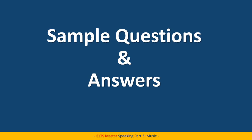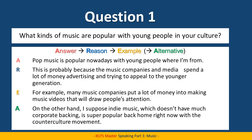So let's look at some sample questions and answers for this lesson on music. The first question is: what kinds of music are popular with young people in your culture? Here's my answer: Pop music is popular nowadays with young people where I'm from. This is probably because the music companies and media spend a lot of money advertising and trying to appeal to the younger generation. For example, many music companies put a lot of money into making music videos that will draw people's attention. On the other hand, I suppose indie music, which doesn't have much corporate backing, is super popular back home right now with a counterculture movement. So that's another example. You can see here we have the Answer, the Reason, the Example, and the Alternative as well.